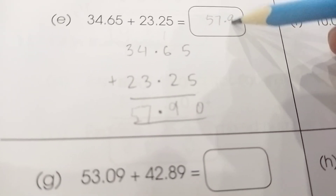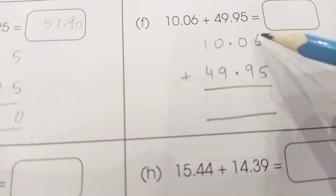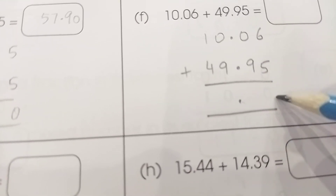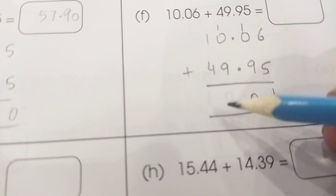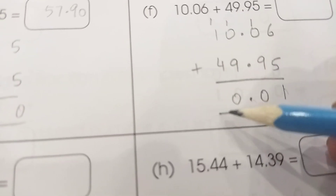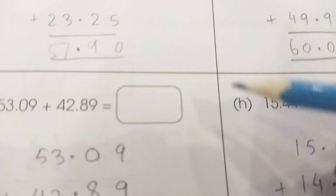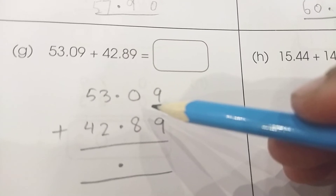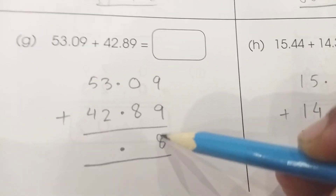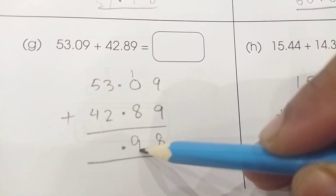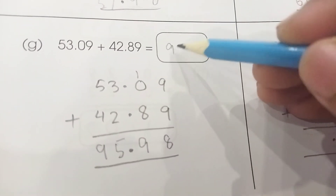Then we have 10.06 plus 49.95. Aligning decimals vertically: six plus five is eleven, carry one; one plus nine plus one is eleven again — keep one carry one; nine plus nine plus one is another carry situation. The answer is 60.01. And for the next problem, two plus five gives nine — the answer is 95.98.